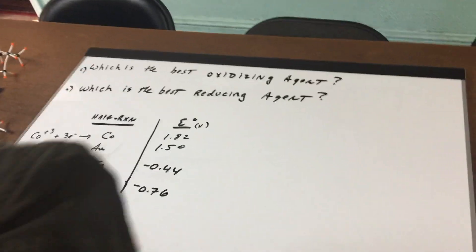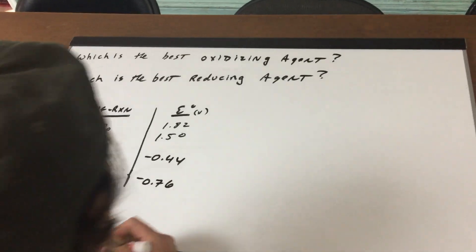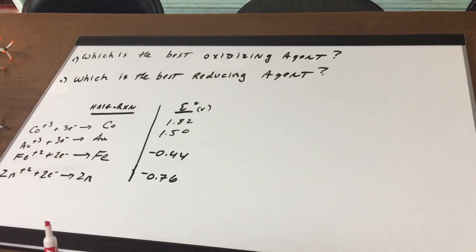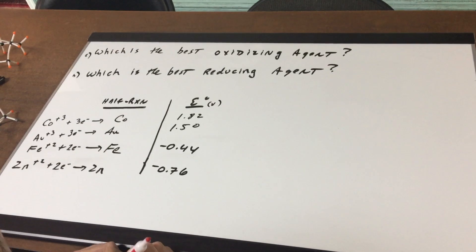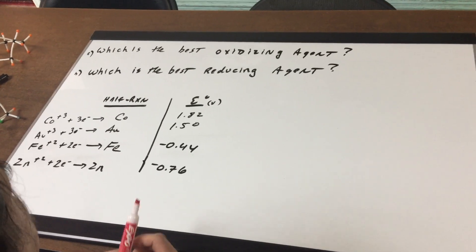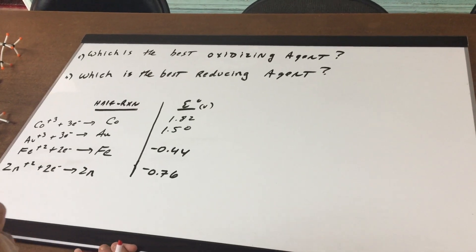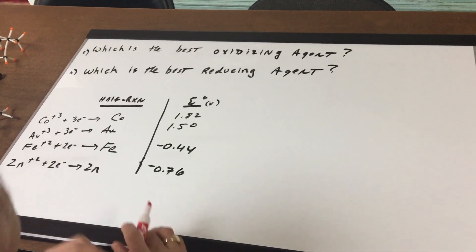The first thing I want to do here, this is a very important DAT question that many kids have difficulty with. I'm going to give you four half cell reactions and I'm going to ask you which one of these is the best oxidizing agent and which is the best reducing agent. I'm going to show you an easy way to do this.